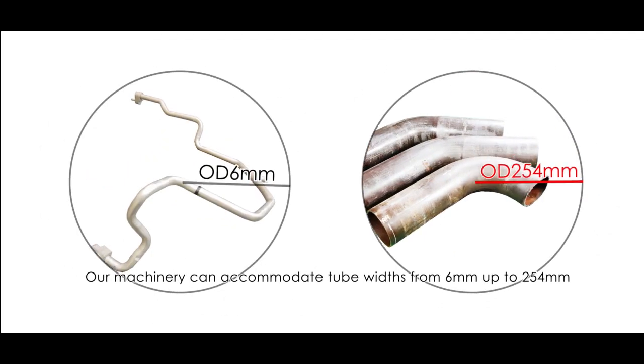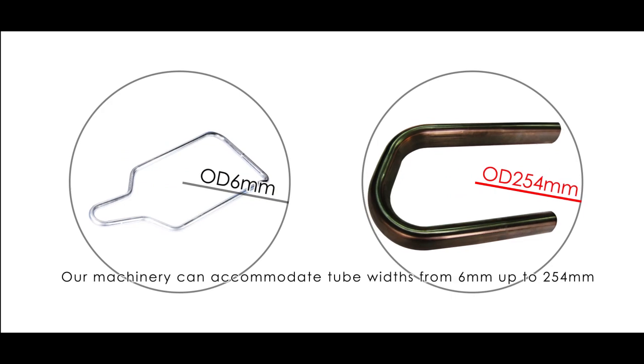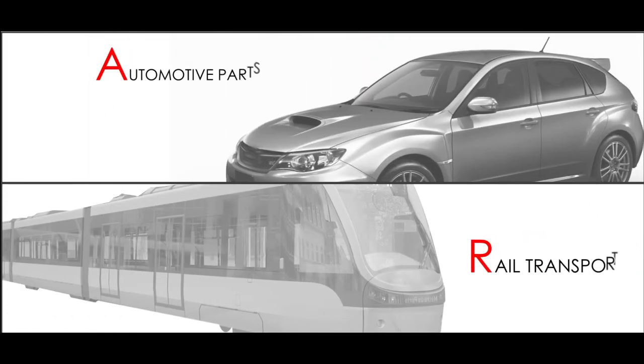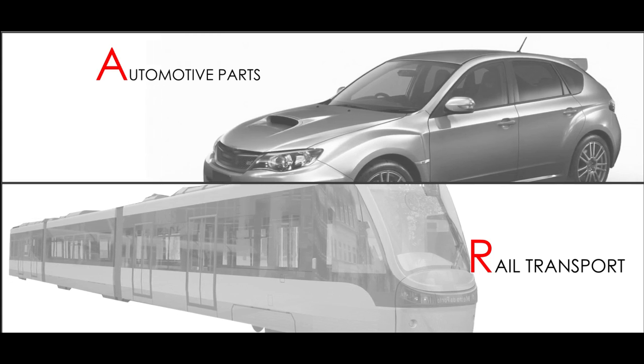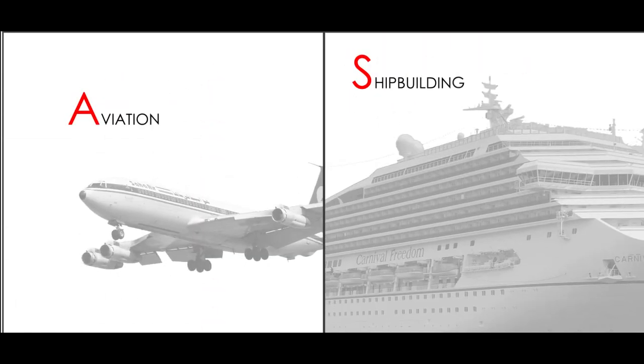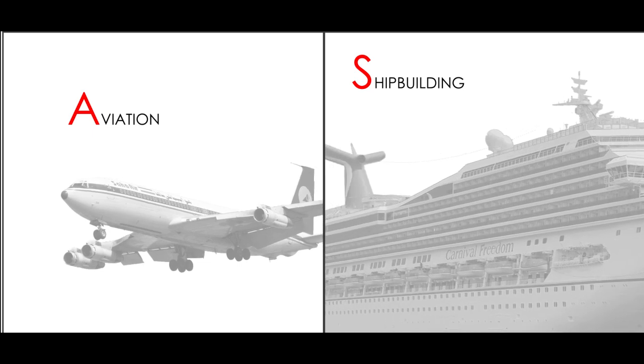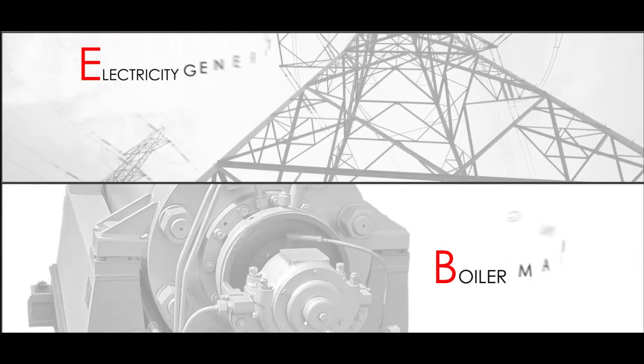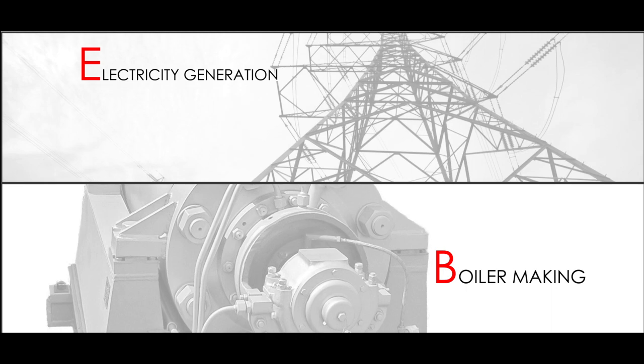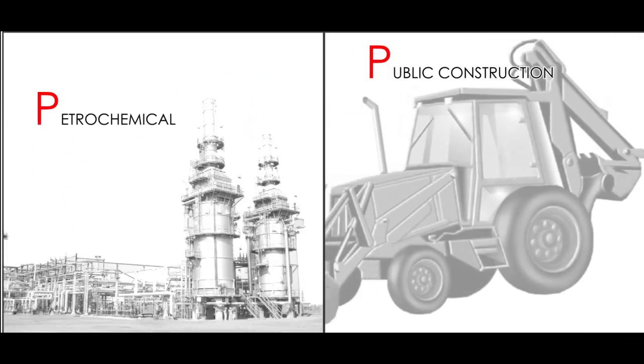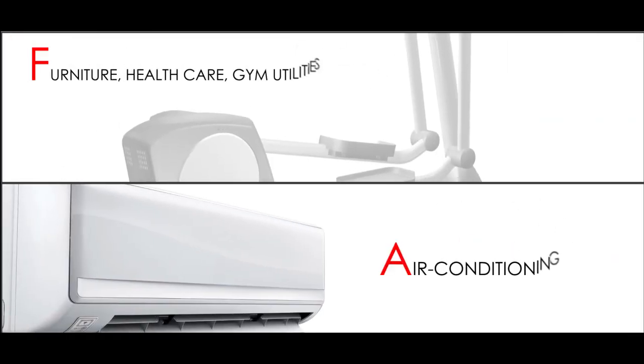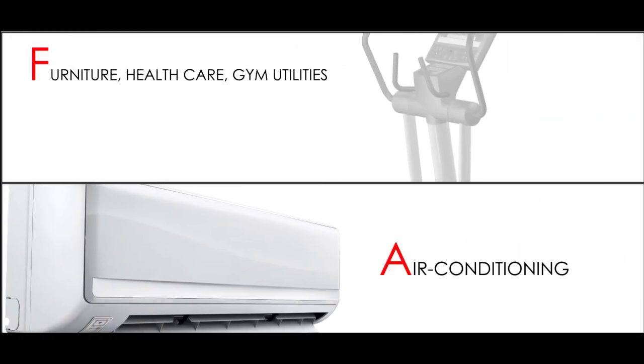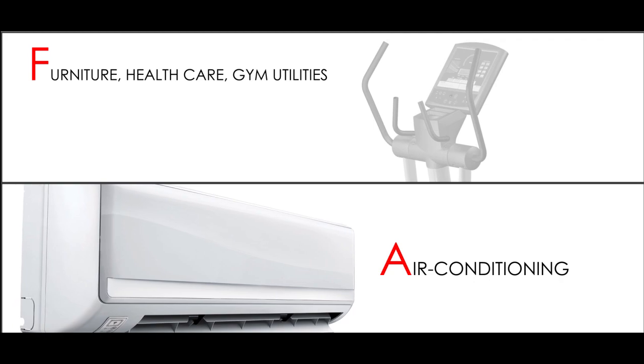Our machinery can accommodate tube widths from 6mm up to 254mm, implemented in a wide range of industries including automotive parts manufacturing, rail transport, aviation, shipbuilding, electricity generation, boiler making, petrochemical, public construction, furniture, healthcare, gym utilities, air conditioning, and more.